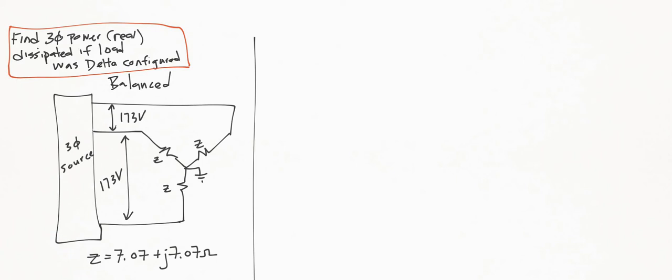To solve this, we have to first realize that the Y connection is just thrown in there to confuse you. We don't really need to solve this Y circuit in order to get the Delta circuit. We can simply replace the Y load with the Delta load, and then we solve it as a Delta.